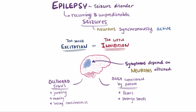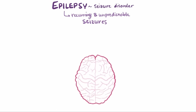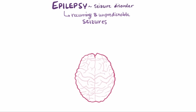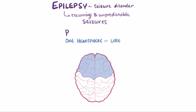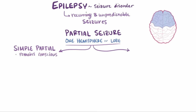People with epilepsy experience recurring episodes of some form of seizures, and we can start grouping the seizures by the region of the brain that's affected. When the affected area is limited to one hemisphere, or one half of the brain, or sometimes even a smaller area like a single lobe, we call it a partial or a focal seizure. These seizures can be subcategorized by whether someone remains conscious, called a simple partial seizure, or whether someone has impaired consciousness, called a complex partial seizure.